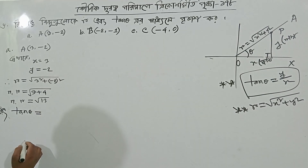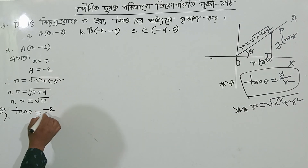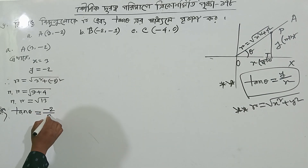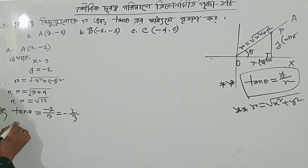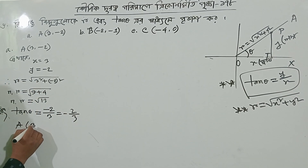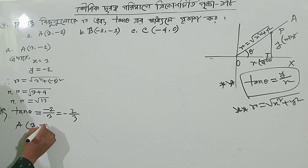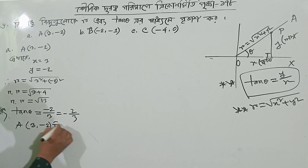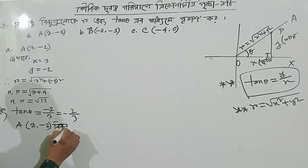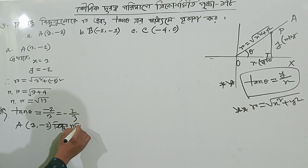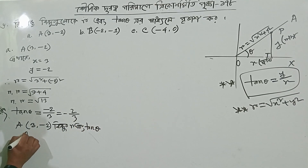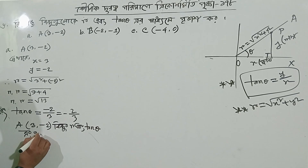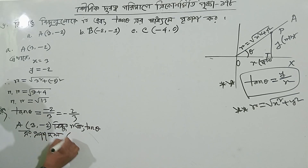y equal to minus 2 minus 3. The root 2 is now equal to r equal to root 13. And so r equal to root 3 equal to root 3.